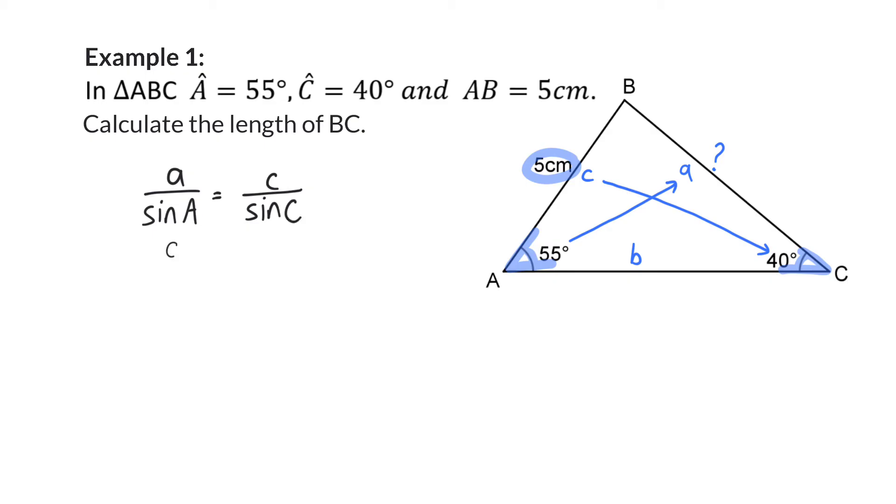Next, we can substitute in what we were given. So angle A is 55 degrees, side c is 5 centimeters, and angle C is 40 degrees. So to solve side a, all I need to do is take the sin 55 and multiply with it on the right. When determining this on a calculator, you will find that a is 6.37 centimeters.